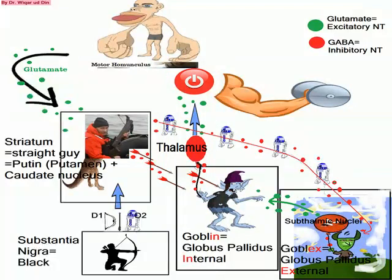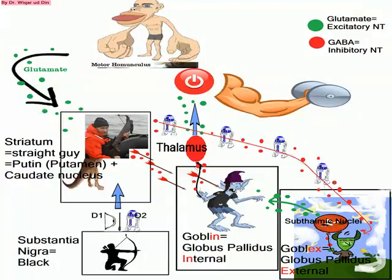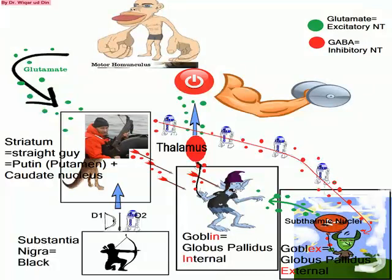In the direct pathway, the striatum inhibits globus pallidus internal, stopping it from inhibiting the thalamus, and the thalamus in return excites the muscle fibers. In the indirect pathway, the striatum inhibits globus pallidus external from inhibiting the subthalamic nucleus; the subthalamic nucleus then excites globus pallidus internal, causing further inhibition of the thalamus. Substantia nigra provides input to the striatum through D1 and D2 dopamine receptors — D1 helps initiate the direct pathway and D2 helps initiate the indirect pathway.